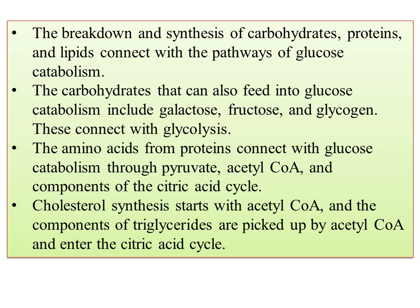The three metabolites are dependent on each other. Carbohydrates that feed into glucose catabolism include galactose, fructose, and glycogen — these connect with glycolysis. Amino acids from protein connect with glucose catabolism through pyruvate, acetyl coenzyme A and components of the citric acid cycle. Cholesterol synthesis starts with acetyl coenzyme A, and components of triglycerol are picked up by acetyl coenzyme A and enter the citric acid cycle. All three are interrelated.